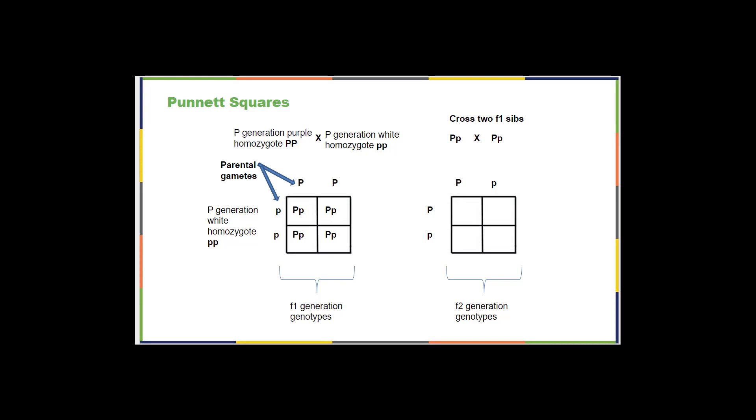Now if we cross two of those siblings from the F1 generation in this second square over here. So we take the first parent, we put it on the top, a big P becomes one column heading, that little p becomes the other column heading. We take the other potential parent and we put it on the side. It doesn't matter which parent goes where, as long as their gametes stay together. So they had a big P and a little p as well. So if we were to fill in that square, we would have a very predictable outcome for what those babies would look like. You would have big P, big P in the upper left-hand box, big P, little p in the upper right-hand box, big P, little p in the lower left-hand box, and little p, little p in the lower right-hand box just by clicking and dragging. And you're going to do a lot of that as you learn about Punnett squares and practice that material.